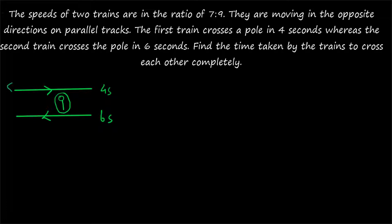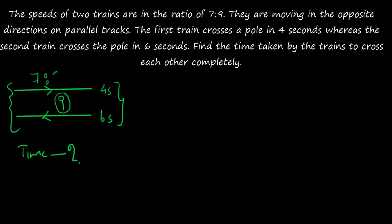So if that is the case, what is the time taken by the trains to cross each other completely? The speeds ratio is also given as 7 is to 9. If you proceed in the traditional manner, this will be a very lengthy question — not appropriate for competitive exams. So we can study a shortcut here.